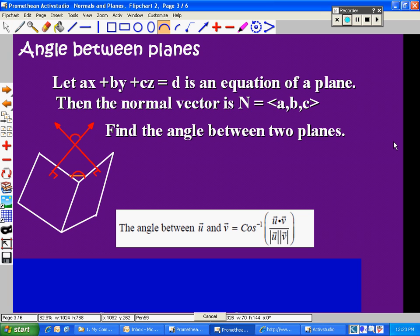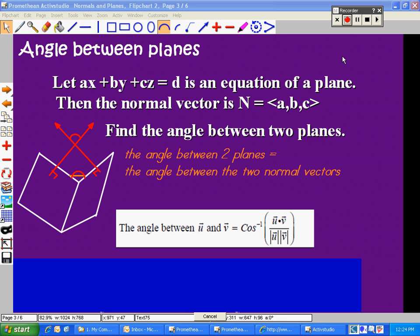So let's write that statement down. The angle between the two planes is equal to the angle between the two normal vectors. And I know the equation from my formula sheet for how to find the angle between two vectors. On my formula sheet, they use u and v. In this case, we're going to use the two normal vectors.